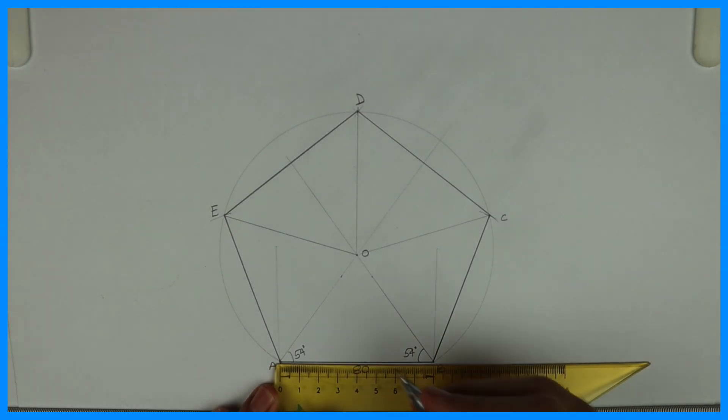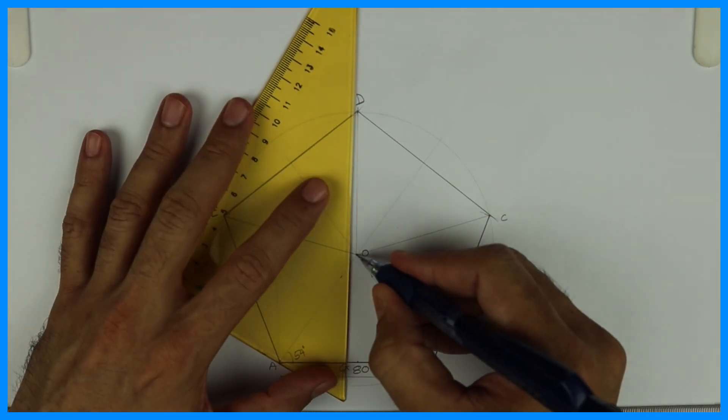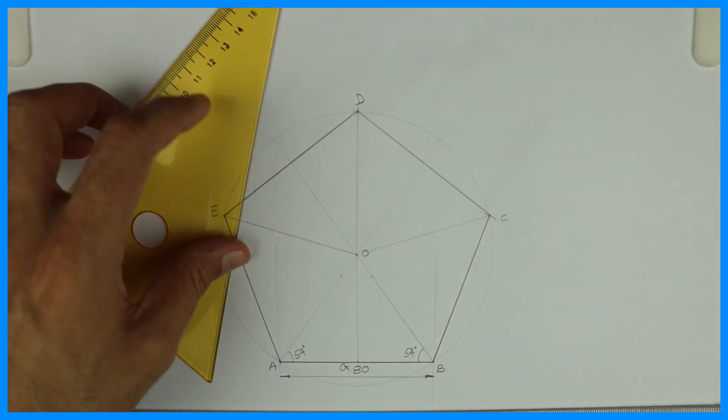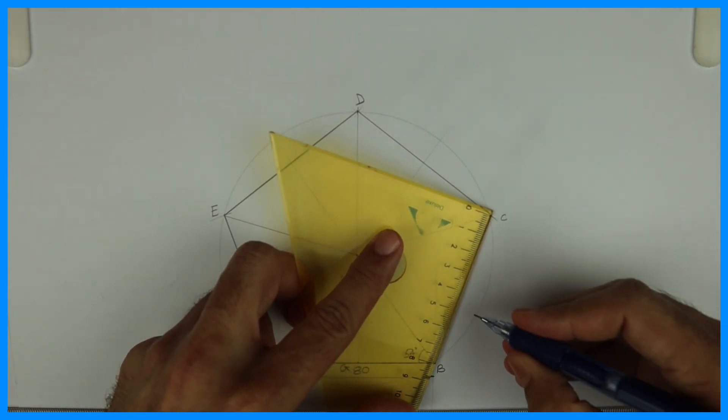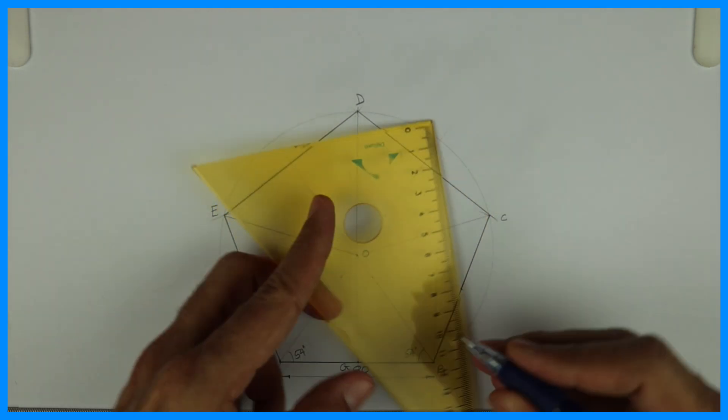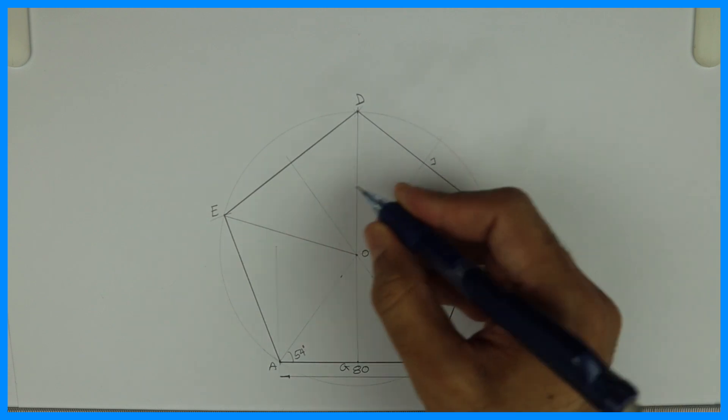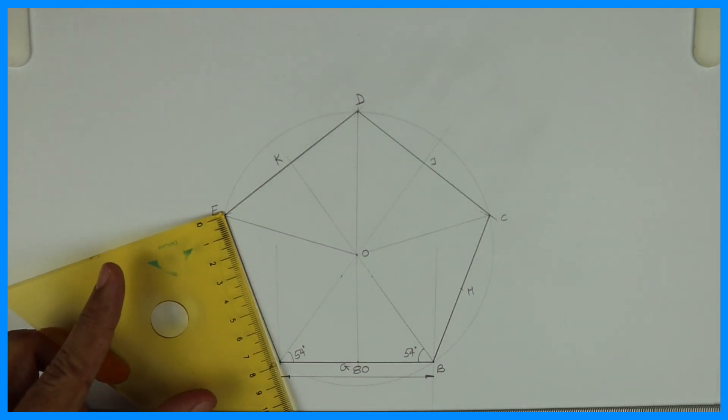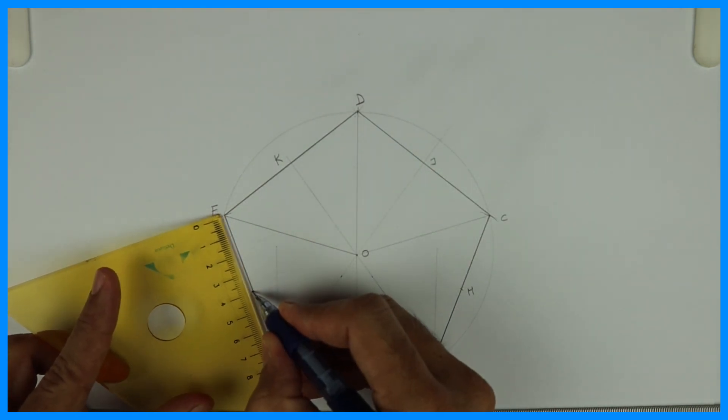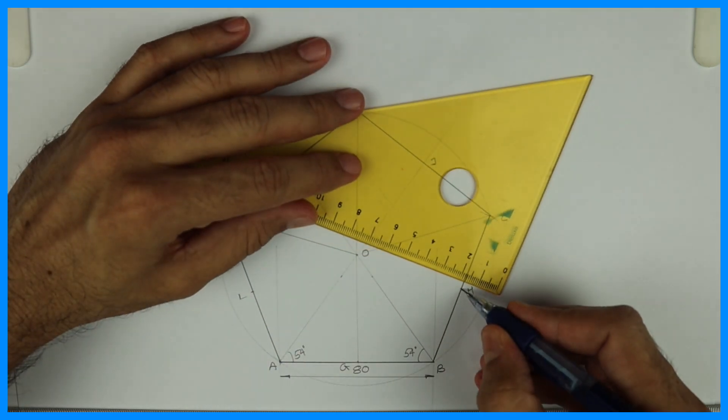Now we'll mark the midpoint of all the sides and join from O. So OG, we'll take midpoint of BC also. It will be H, J, K. And midpoint of AE would be L. Join from O.